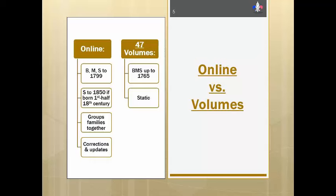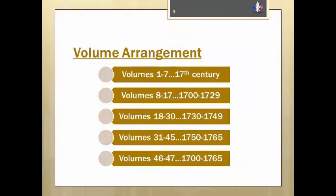So why bother learning how to use the 47 volumes in the first place? Well, you may not have access to or can't afford to subscribe to the PRDH from home, or you're at a library that doesn't have a subscription to the online PRDH but does have this set. And if you are researching pre-1766, then these volumes become very valuable. Searching through these pages also gives you a time-based chronology of the life-changing events in your particular village of interest, not evident when using the online version. If you are doing collateral research especially, one page from these books usually contains several records of interest to your family research.